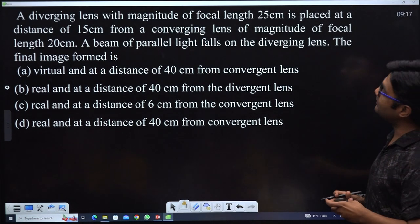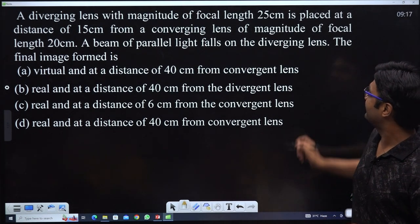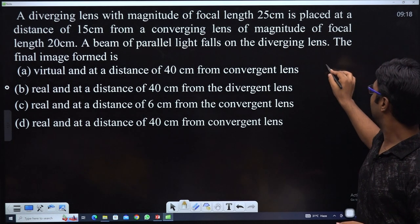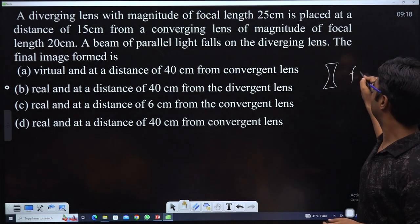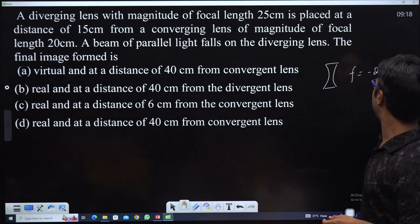A diverging lens with magnitude of focal length 25cm. The focal length is minus 25cm.